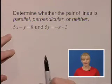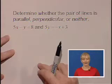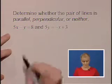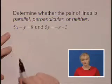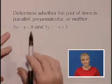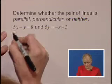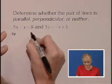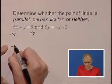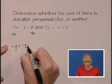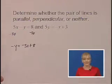So a good strategy would be to get both of these lines into the slope-intercept form, which means we need to isolate y on one side of the equation. So I'm going to subtract 5x from this first equation. If I subtract 5x from both sides,